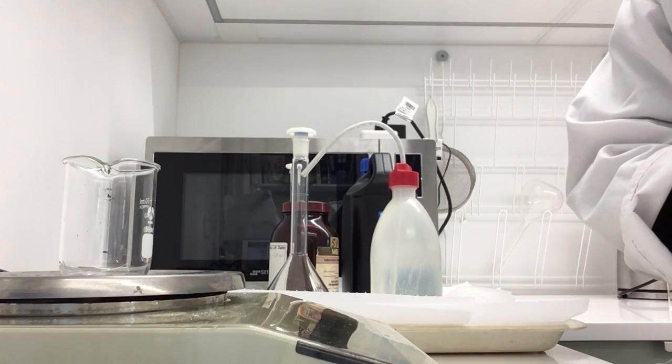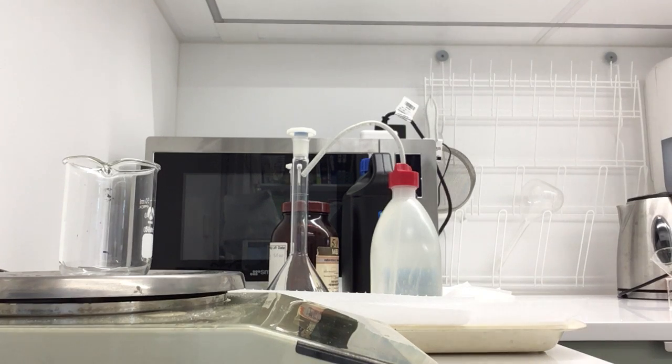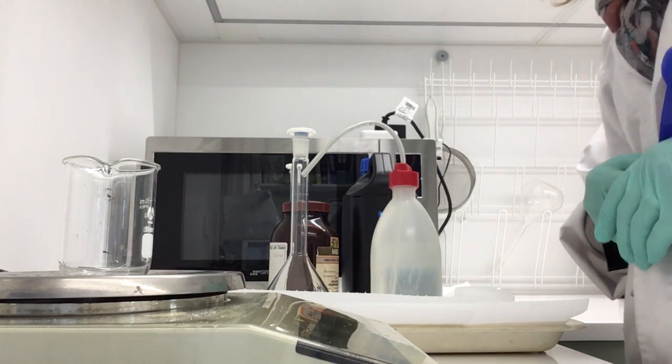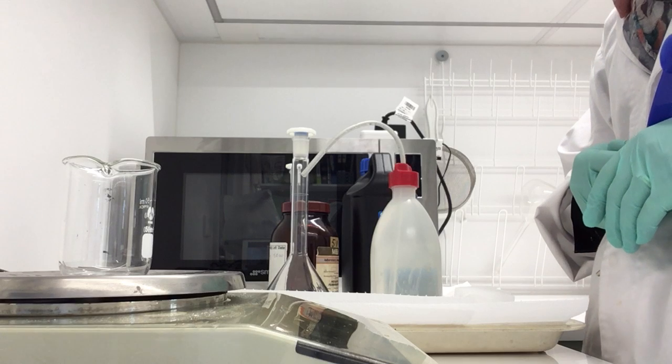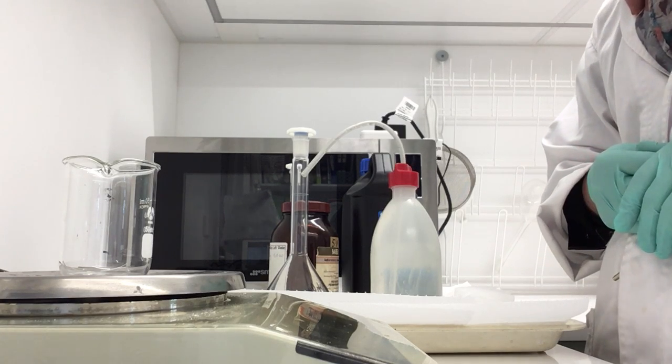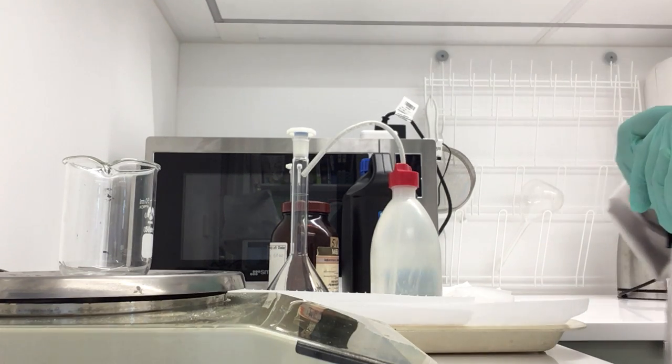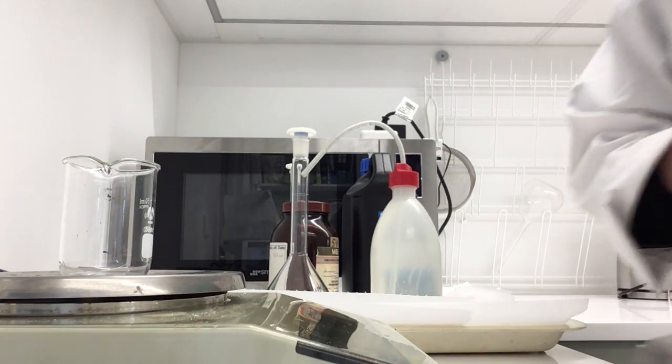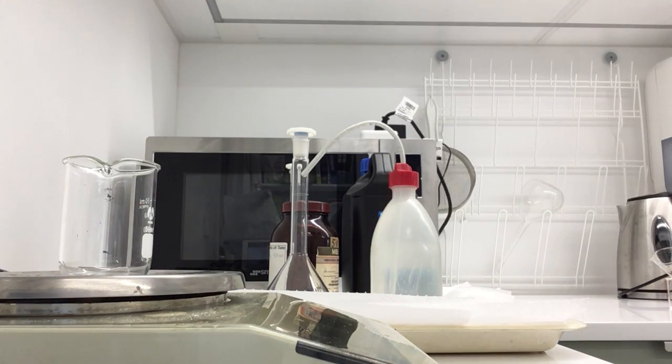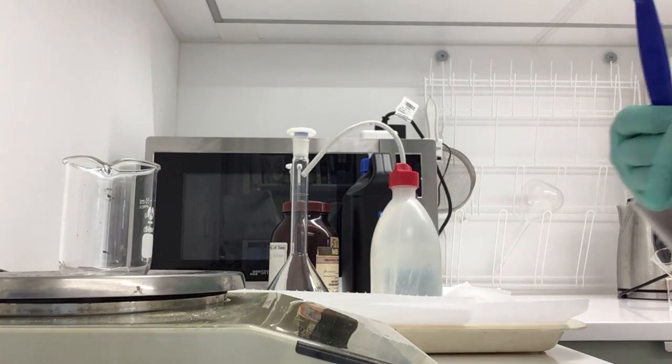We're doing hydrogen peroxide and bleach today. The first part of that is to make up our standard potassium permanganate solution, our KMnO4, and we're aiming for a concentration of 0.02 molar, which I've worked out in 250 mL is about 0.79 grams.